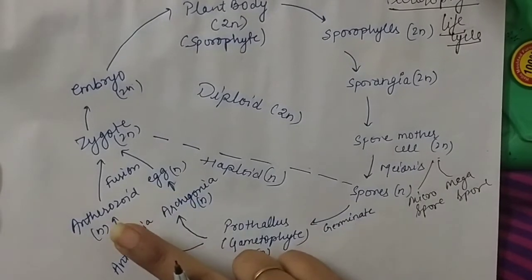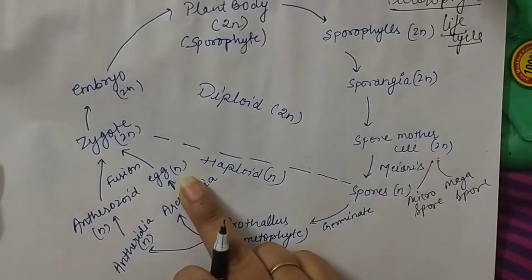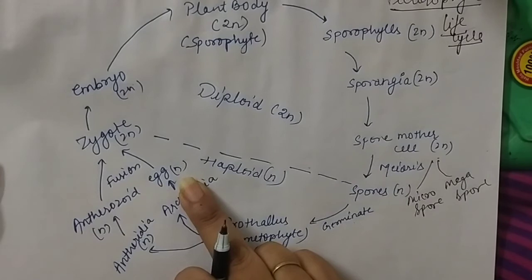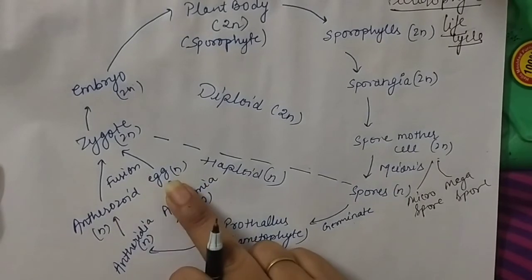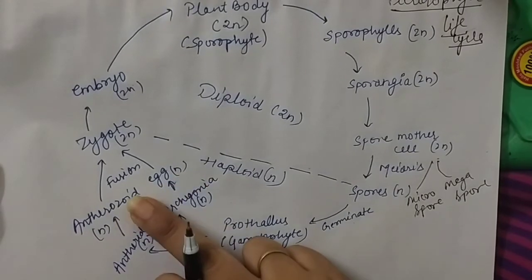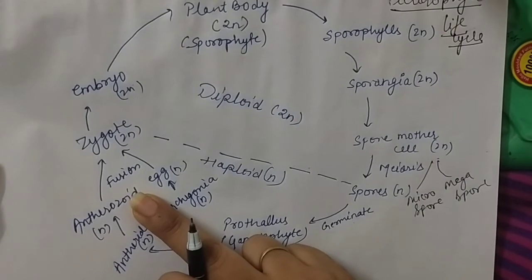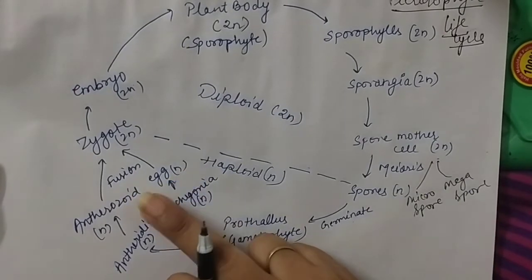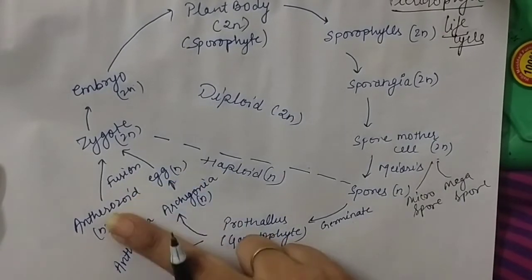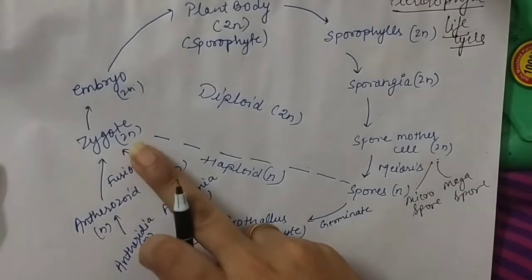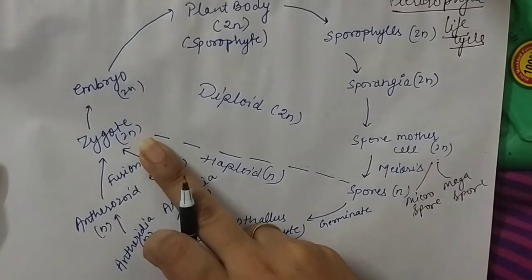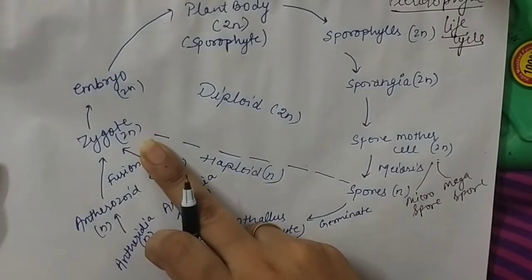For the fusion of these two different types of gametes, water is required. The fusion of male and female gametes occurs in the presence of water, and when they fuse together they form the diploid zygote. This means the sporophytic condition comes again.